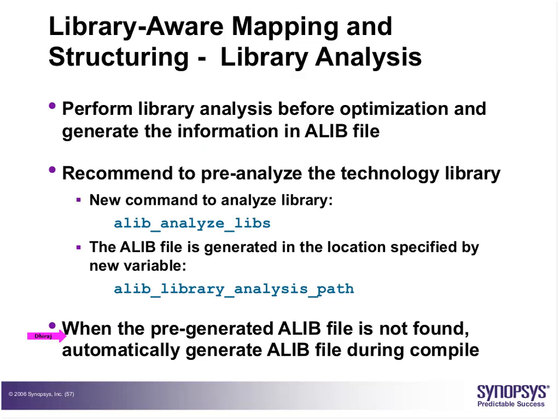The library analysis is performed before optimization and the information is kept in a file called a .lib file. If a pre-generated .lib file is not found, it is automatically generated during compile. In the lab, when you start and refresh the page directory, it will generate this .lib file — the first compile will take 5-7 minutes to complete this analysis.